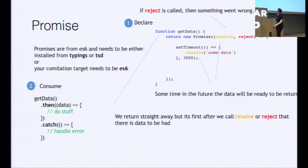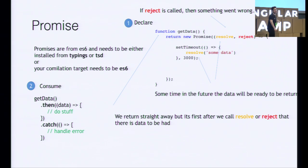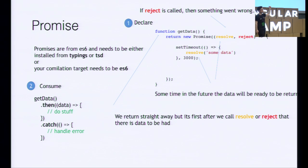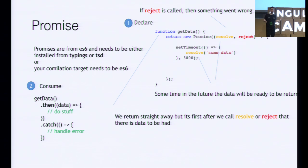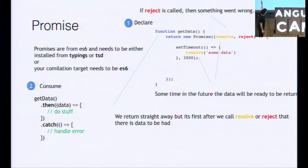Looking at promises, we do a return new Promise. Inside the promise constructor, we use an arrow function that takes two arguments: resolve and reject. Resolve is when our data safely arrives sometime in the future, and reject means something went wrong. Returning a promise means we can call then or catch on it — then maps to resolve and catch maps to reject.